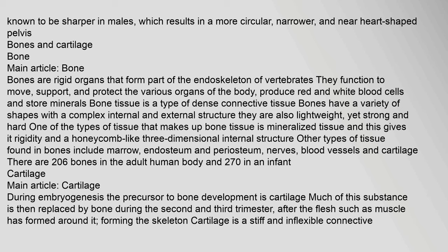Bones are rigid organs that form part of the endoskeleton of vertebrates. They function to move, support, and protect the various organs of the body, produce red and white blood cells, and store minerals. Bone tissue is a type of dense connective tissue. Bones have a variety of shapes with a complex internal and external structure; they are lightweight, yet strong and hard. One of the types of tissue that makes up bone tissue is mineralized tissue, which gives it rigidity and a honeycomb-like three-dimensional internal structure. Other types of tissue found in bones include marrow, endosteum and periosteum, nerves, blood vessels and cartilage. There are 206 bones in the adult human body and 270 in an infant.